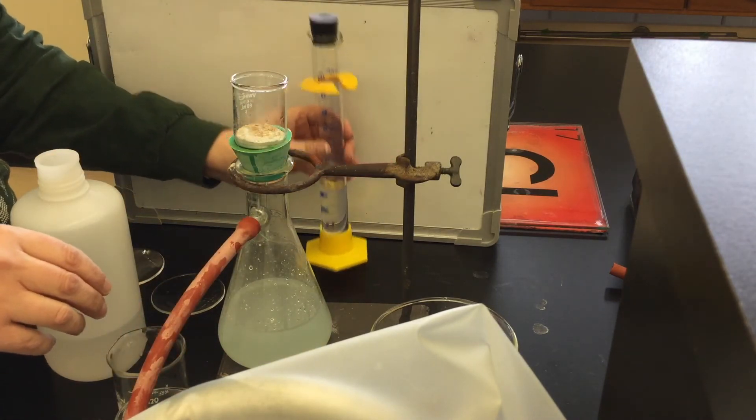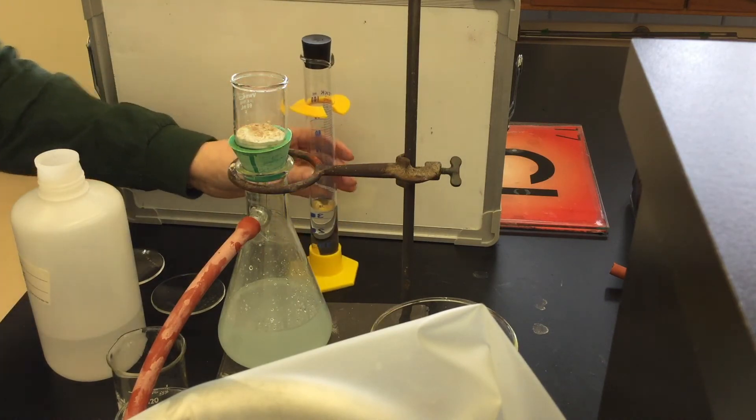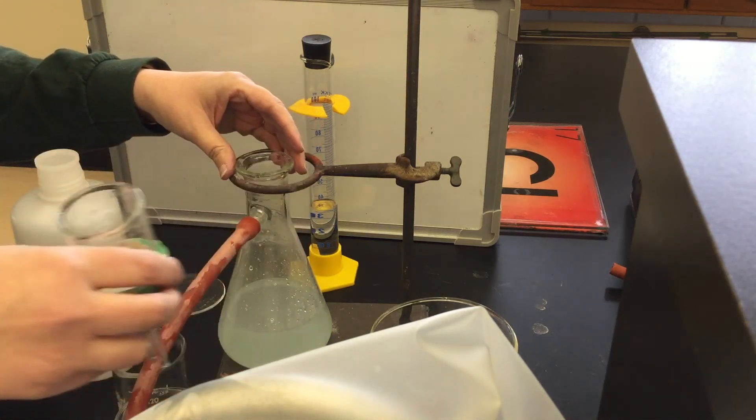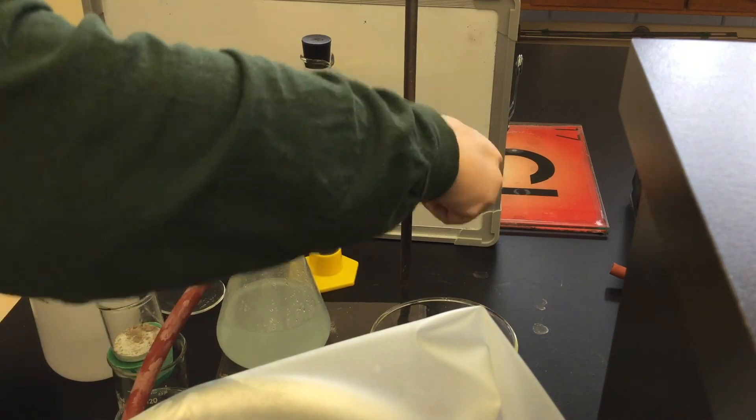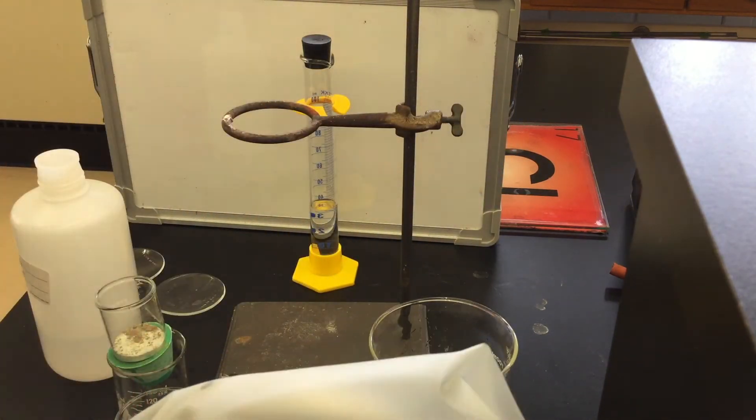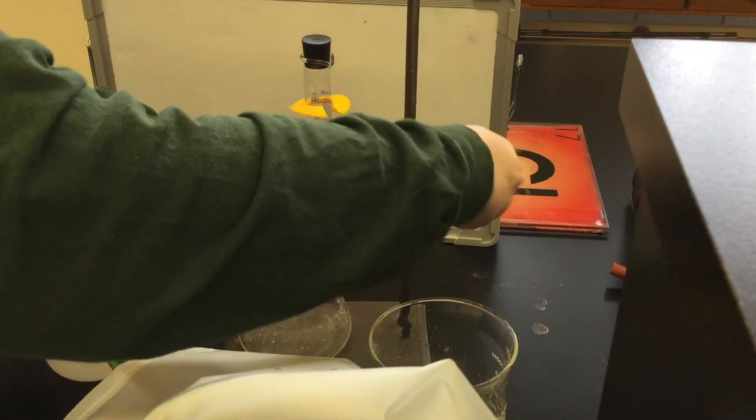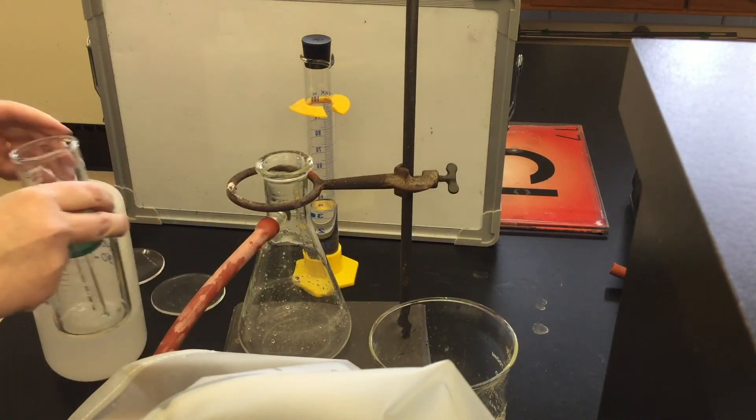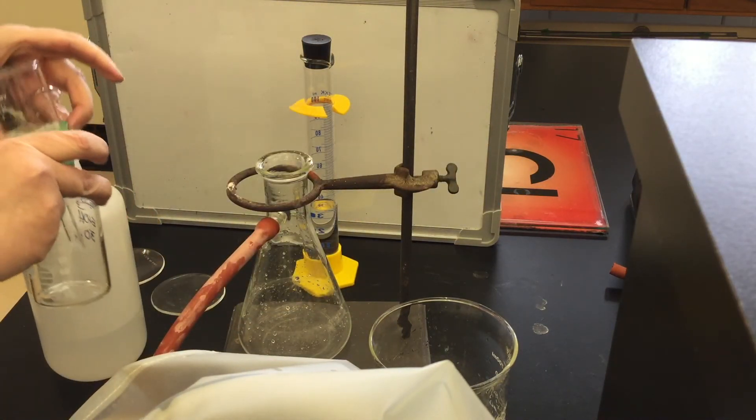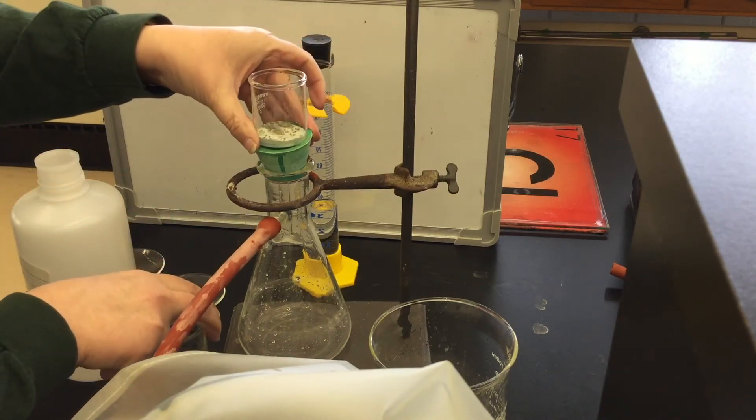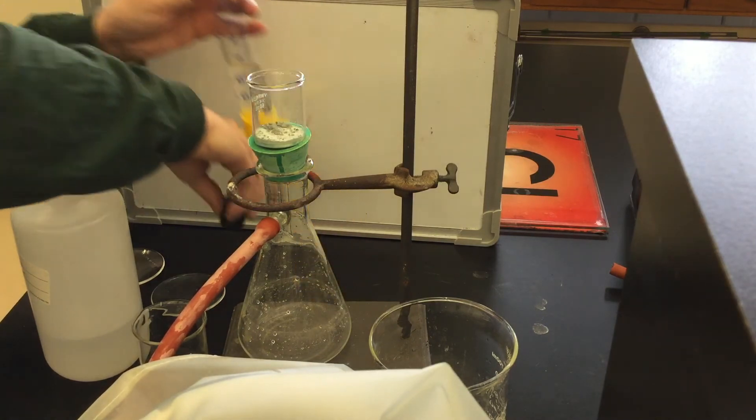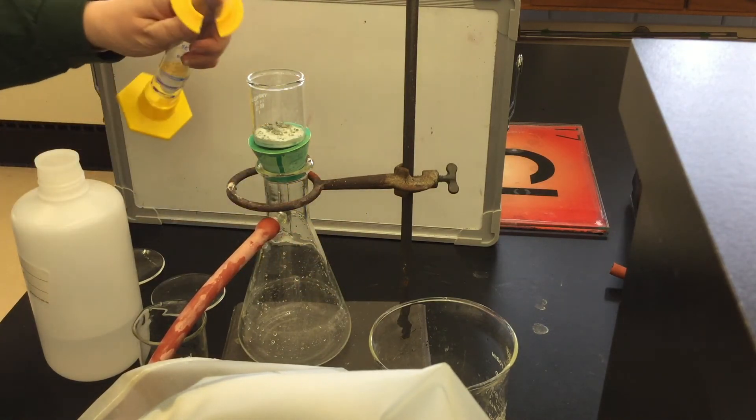Before you do your last washing with the ether, you will need to empty the filter flask. The filtrate from the first two washings can go down the drain, but the ether should not. Do your final washing in four portions of about 10 milliliters of the ethanol. Once you are done, take the filtrate to the hood and dispose of it in the container in the hood.